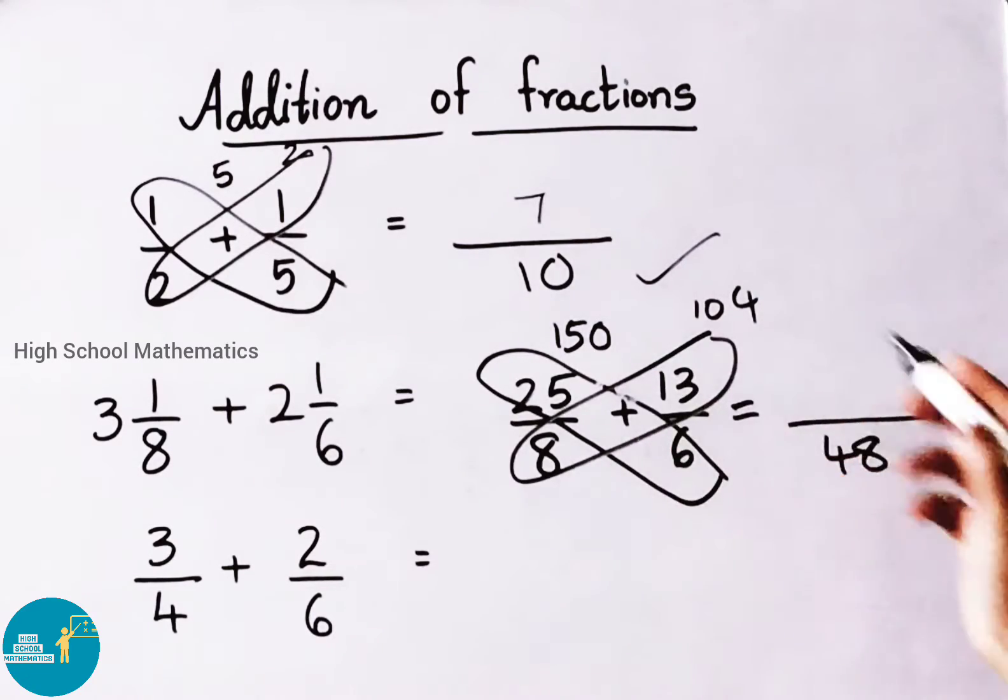Now let us add these both. 150 plus 104 that is 254. So if we want, we can simplify this further and we can write this as mixed fraction also.